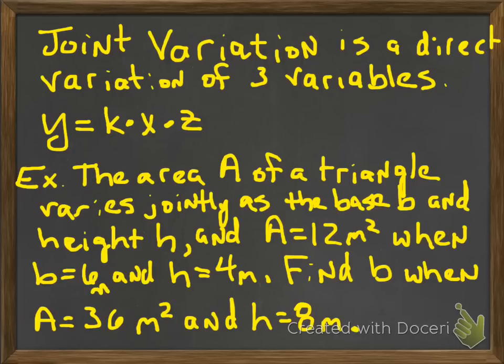So here's an example. The area A of a triangle varies jointly as the base B and height h. And A is equal to 12 meters squared when B is equal to 6 meters and H is equal to 4 meters. Find B when A is equal to 36 meters squared and H is equal to 8 meters. Okay, let's start off with the formula. The area A, so this is going to act like the y. This A is going to act like the y. Varies jointly, okay? That means I'm going to say k times. That's like the varies jointly, or varies directly. Base B, that's like my x. Z is like my H. Okay, so we would plug those in, and this is the formula we would come up with.